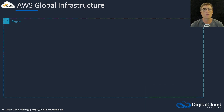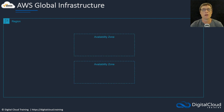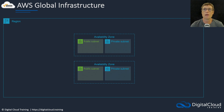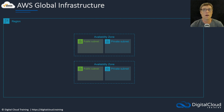Let's look inside a region in a bit more detail. Within a region, as mentioned, there are two or more availability zones. Within those availability zones you can create your subnets — they can be public subnets or private subnets — and each subnet is always within an availability zone, and you can create many many subnets.